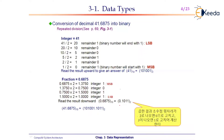To convert the integer 41 to binary, divide by 2: 41 ÷ 2 = 20 remainder 1. Then 20 ÷ 2 = 10 remainder 0. Then 10 ÷ 2 = 5 remainder 0.